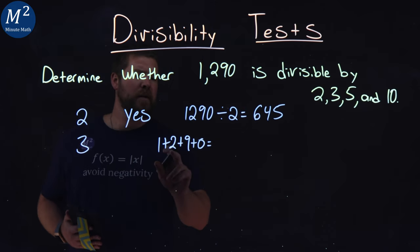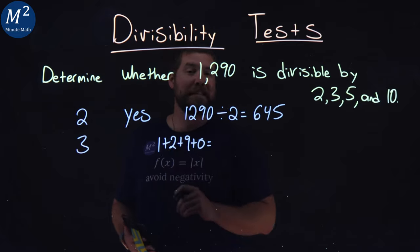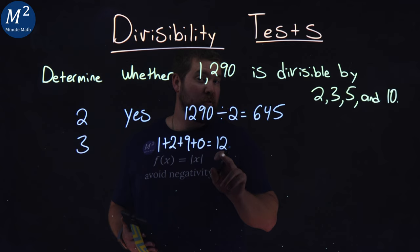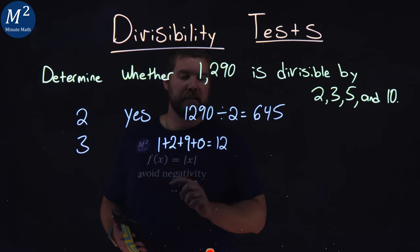1 plus 2 plus 9 plus 0, and what does that equal? 1, 2, 9 plus 0, 1 plus 2 is 3, plus 9 is 12. Does 3 go into 12? Yes, it does.